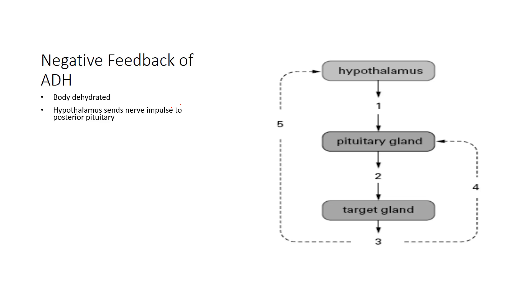The hypothalamus sends a nerve impulse to the posterior pituitary. The posterior pituitary, if you look back in our notes, is kind of part of the nervous system because it's stimulated by the hypothalamus through a nerve impulse, not a hormone. This topic, by the way, is topic four — negative feedback is topic four, page six of our notes. Once the hypothalamus sends it the nerve impulse, the posterior pituitary releases ADH.